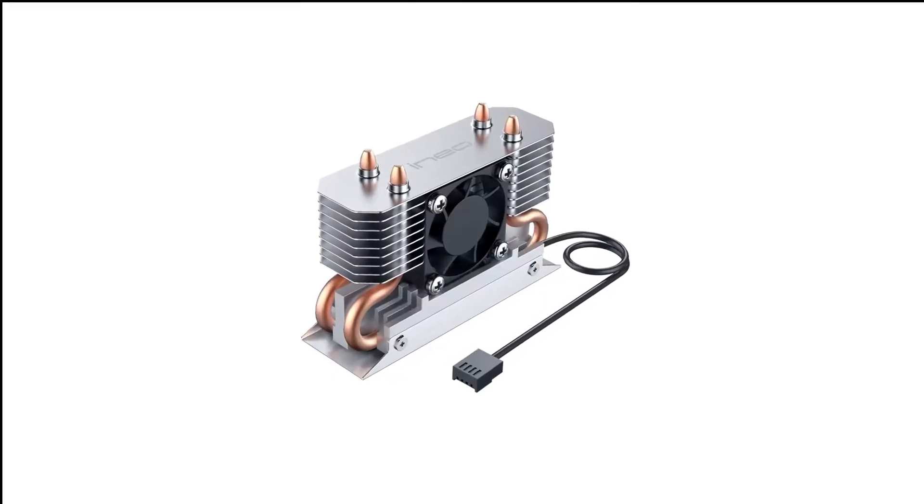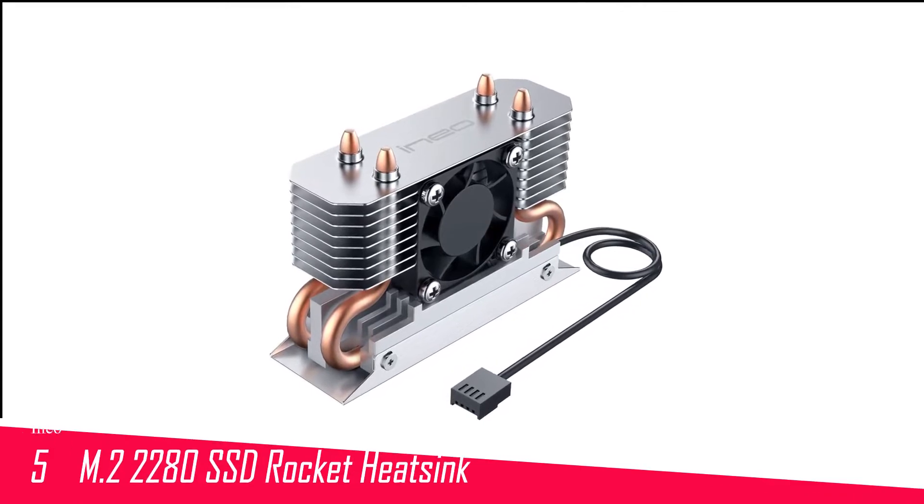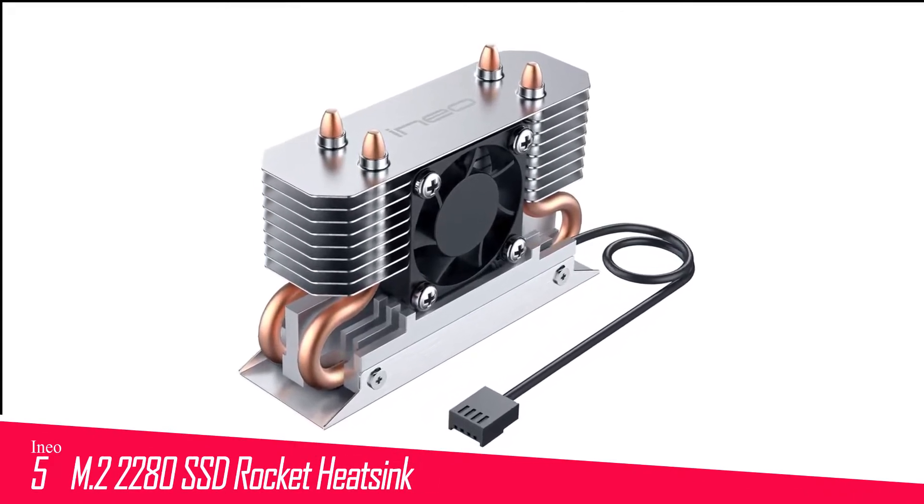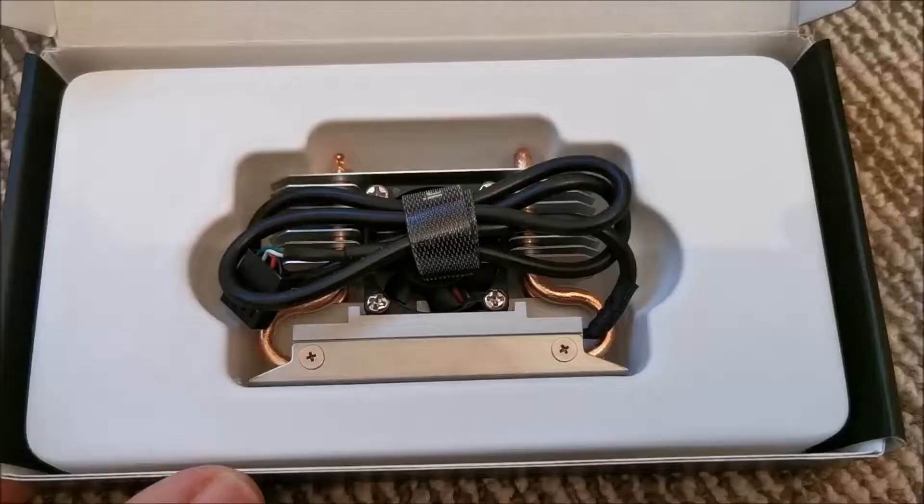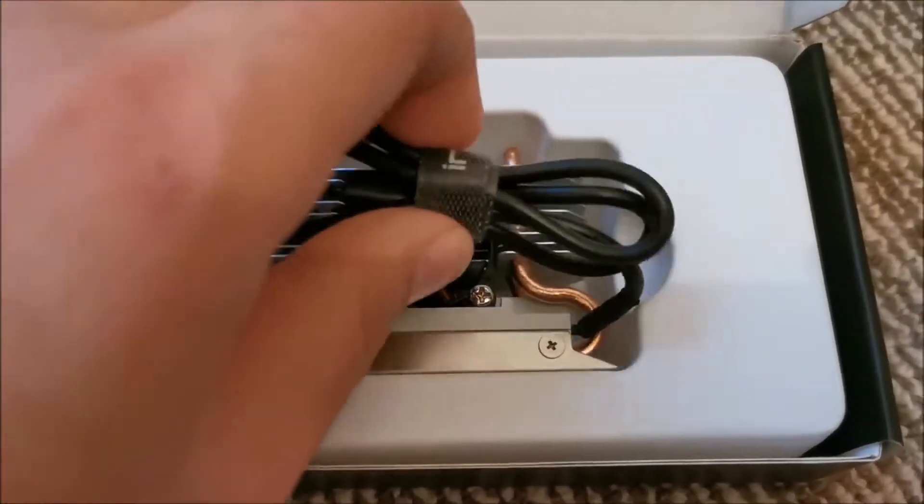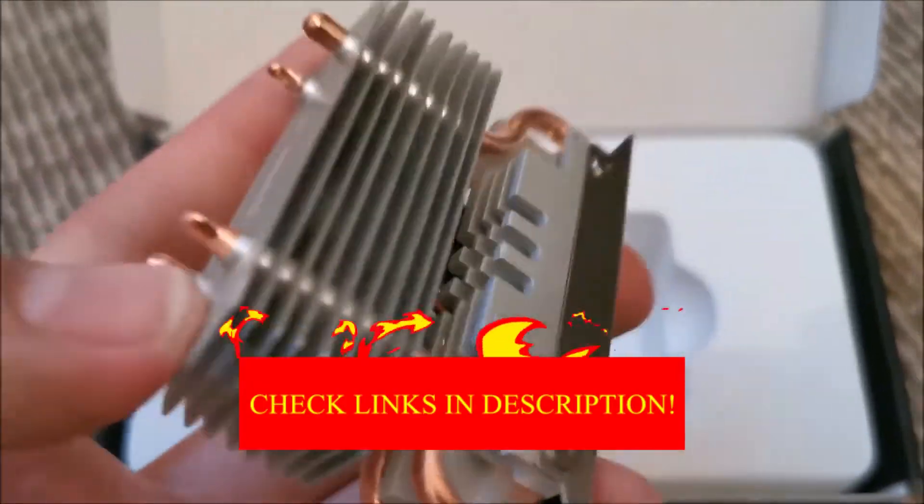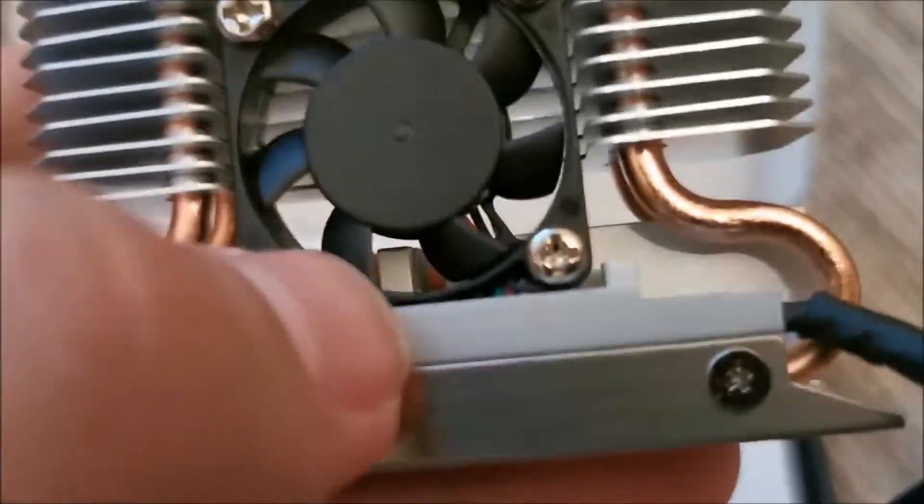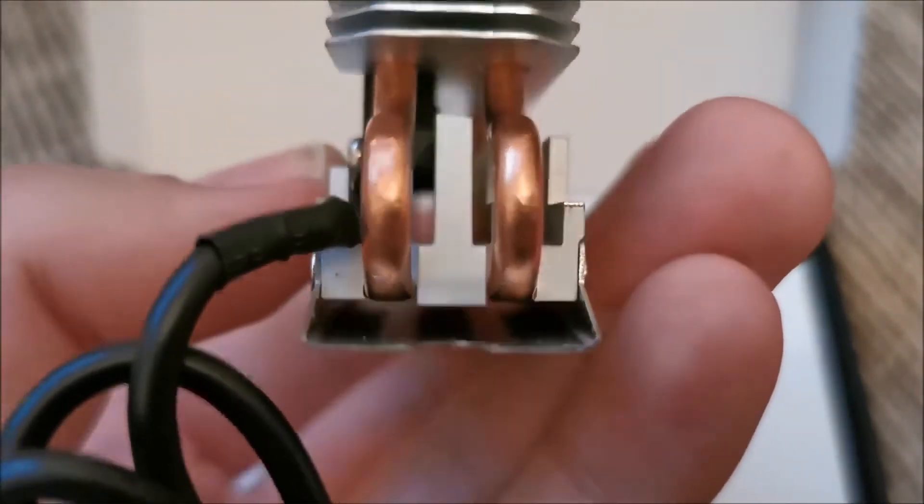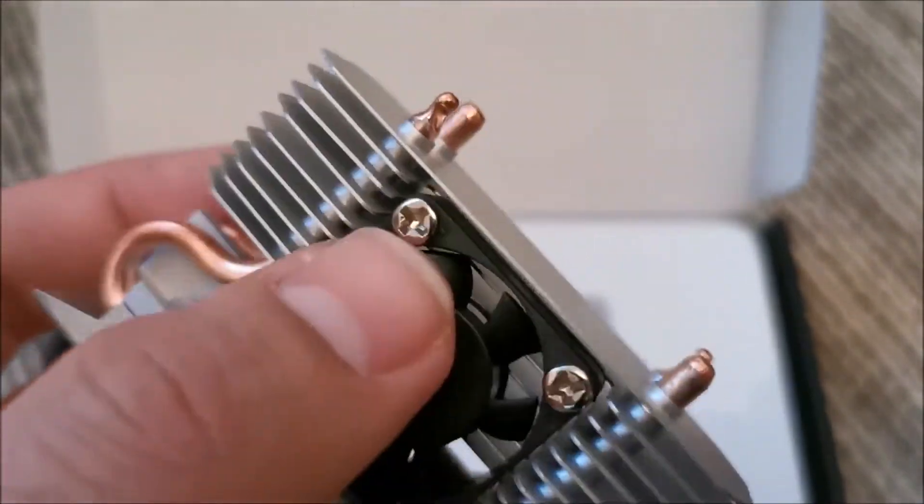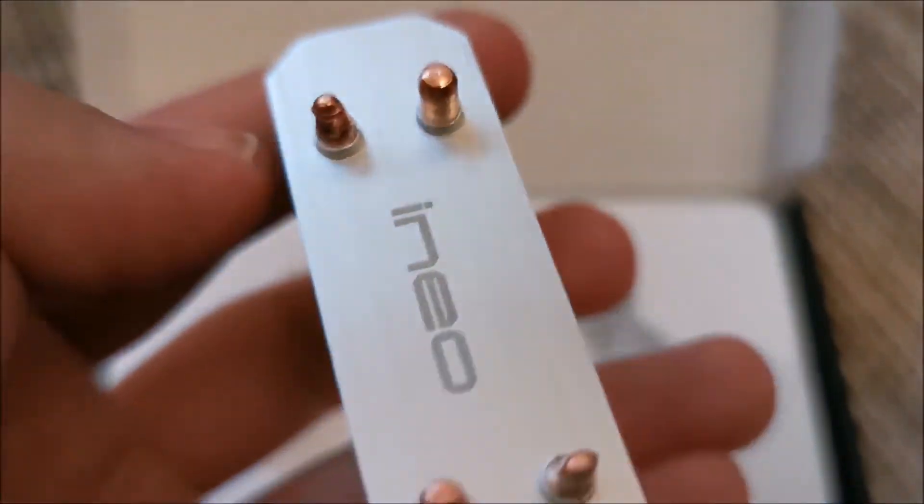Number 5 in my list is Ineo M2 2280 SSD Rocket Heatsink. The rocket heatsink from Ineo resembles the heatsink of a CPU. It even comes with a 30mm fan in the middle. That's actually a good thing because there's plenty of aluminum and copper material to distribute and dissipate all that heat your M2 SSD is generating.